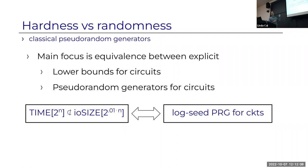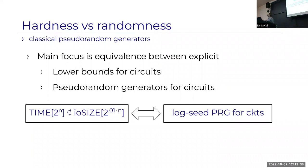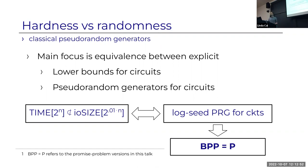The canonical example of this classical equivalence is the result of Impagliazzo and Wigderson from '97: exponential time is hard for circuits of sub-exponential size if and only if there are PRGs that are efficient—polynomial time with logarithmic seed. On the left is a lower bound for circuits: arbitrary functions in exponential time cannot be sped up by non-uniformity. On the right is the PRG. As a consequence, BPP equals P.